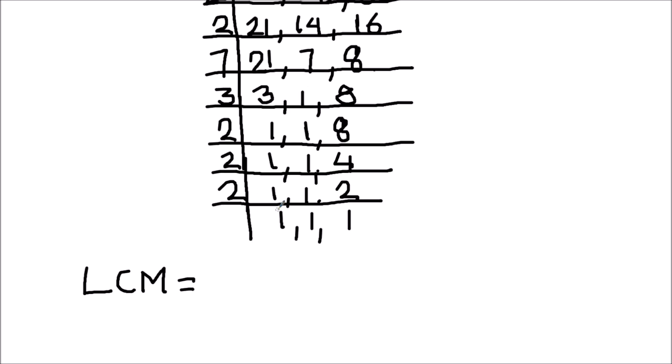All the numbers are fully divided. To find the LCM, or Least Common Multiple, we multiply all the factors on the left-hand side. So 2 times 2 times 7 times 3 times 2 times 2 times 2. This is the LCM of the three numbers. Let's calculate it.